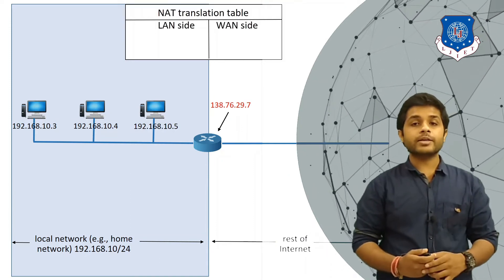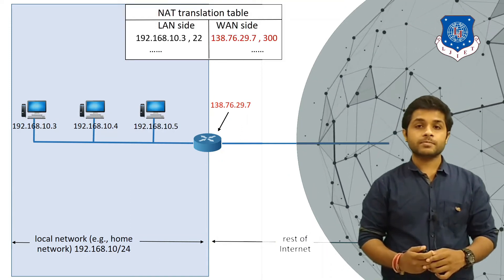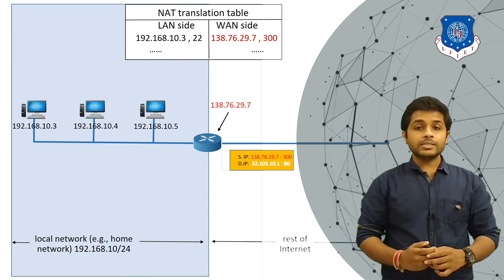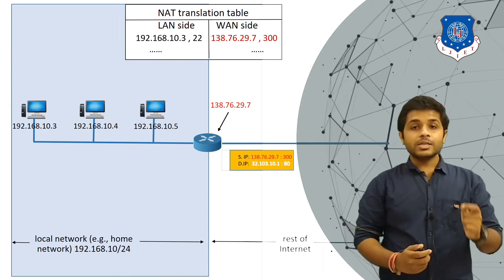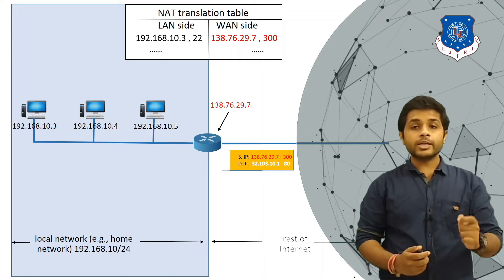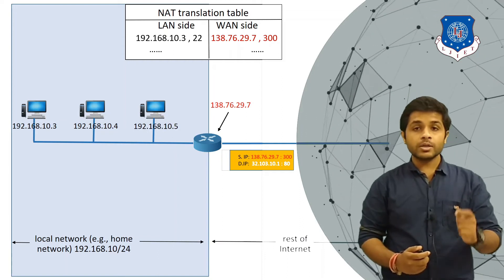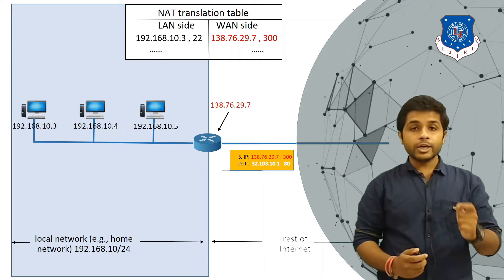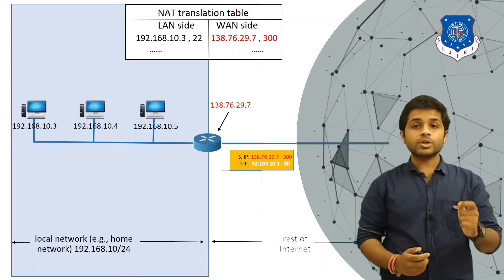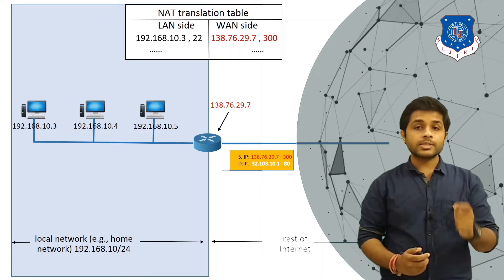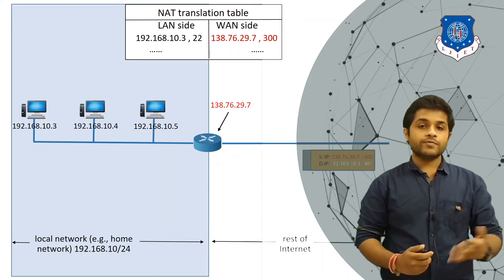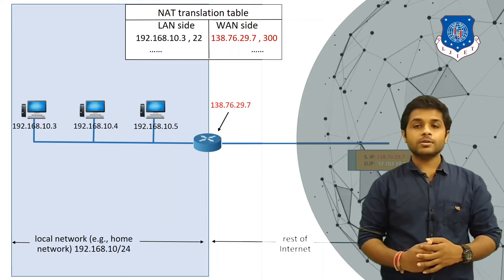You can see that the source IP is changed from 192.168.10.3 with port 22 to 138.76.29.7 with port 3300, and this modified message is sent to the destination.